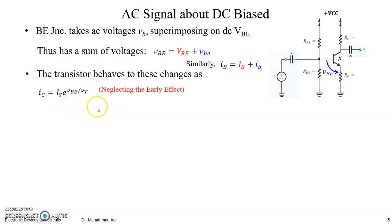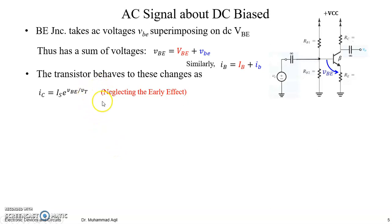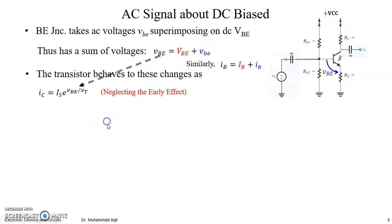Remember, we are currently neglecting the Early effect for simplicity of computation. Otherwise we would have a term related to VCE as well. So our total collector current depends on the total base-to-emitter voltage, which consists of a DC voltage set by the DC supply and an AC voltage set by the AC supply. Substituting this in gives us our expression.